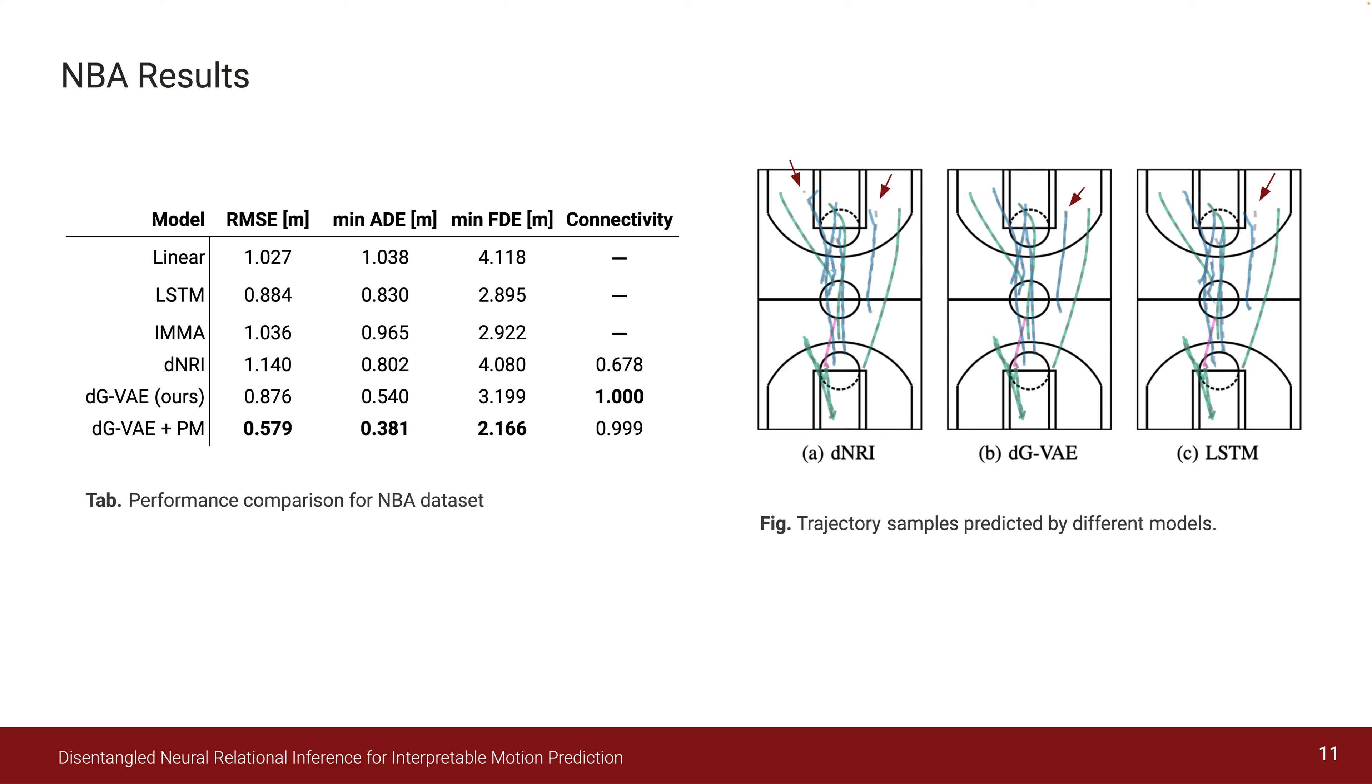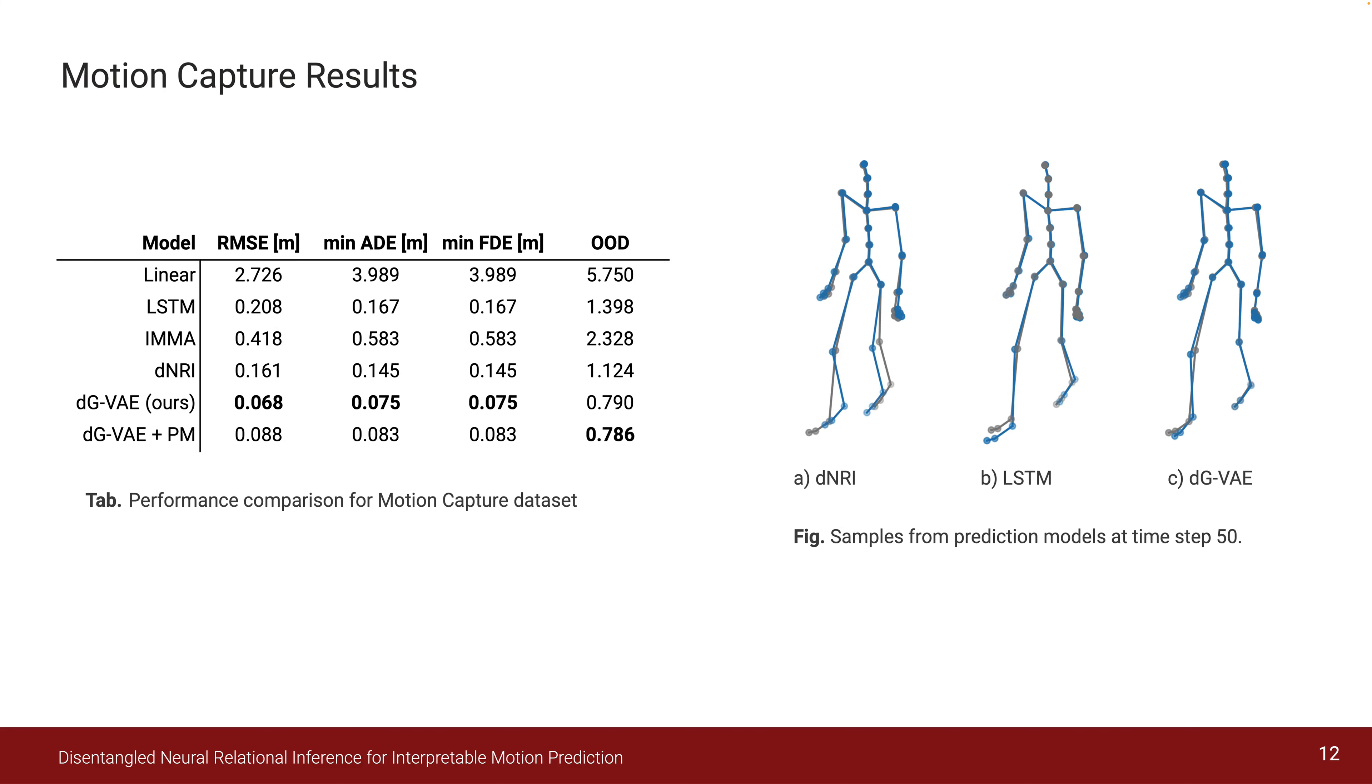From the table on the left, we note that our method outperforms the strongest baseline, which is in this case DNRI, in all metrics by about 25% when edge features are learned and around 45% when these features are disentangled into temporal and static features. In this case, they're being pair matched.